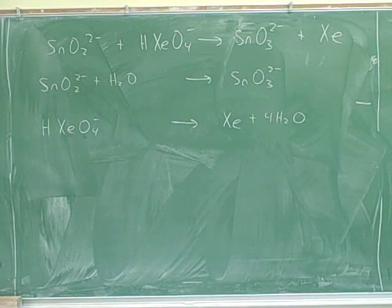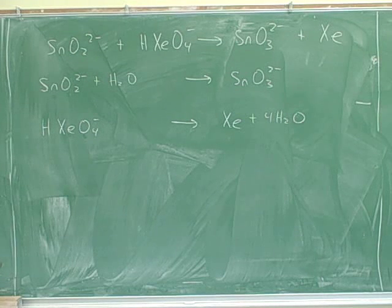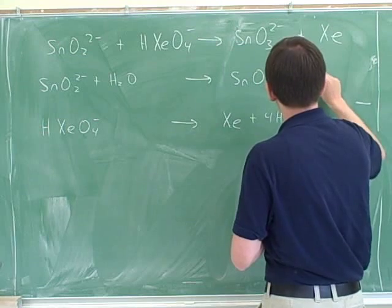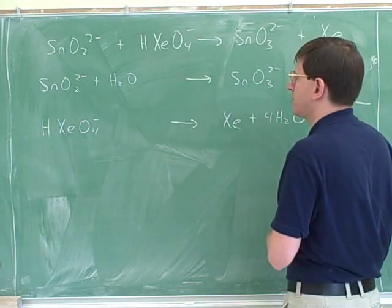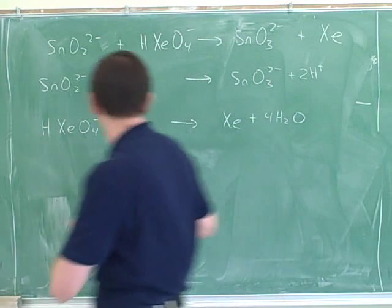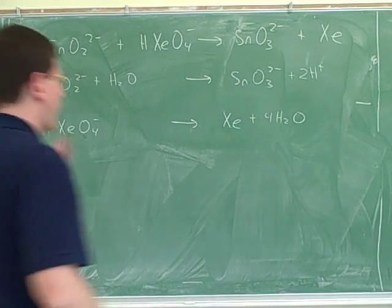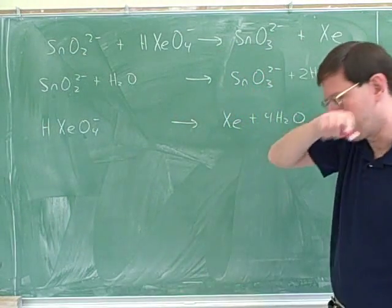So then we add protons, right? We balance the oxygens, next I move to products. I add two protons. So we balance the hydrogens using protons. Now we get two on the right and two on the left, good. So here we add eight protons and then we start balancing electrons.